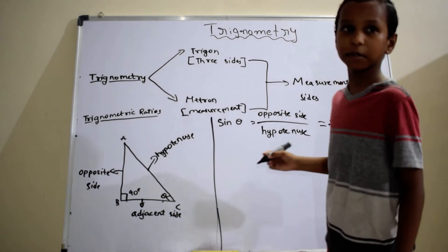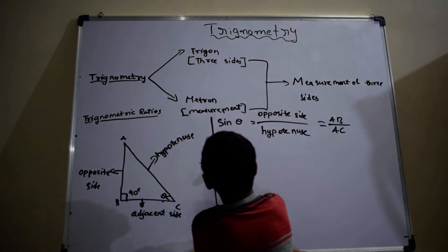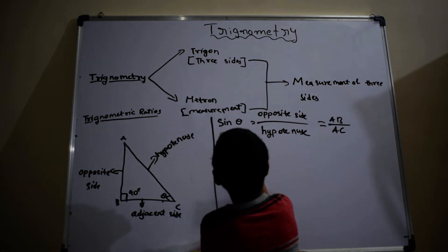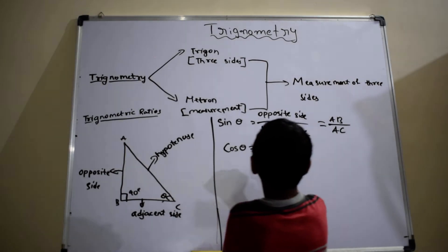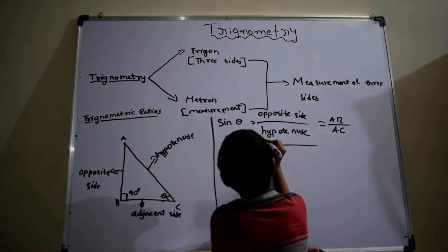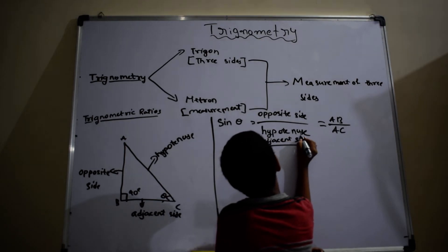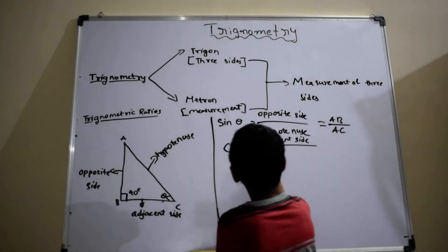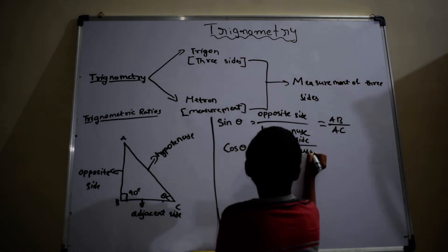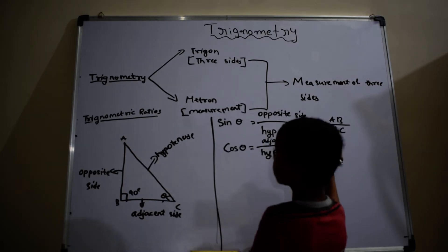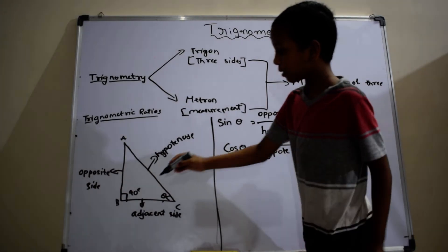The next ratio is cos theta, which is equal to adjacent side by hypotenuse, which is equal to BC by AC.